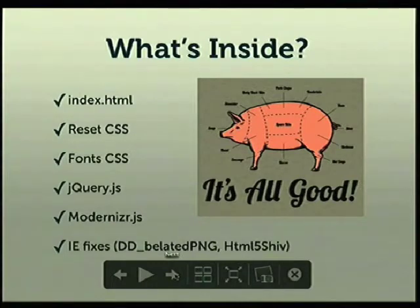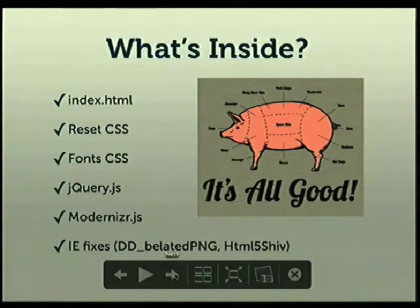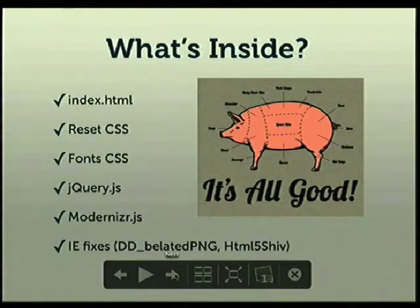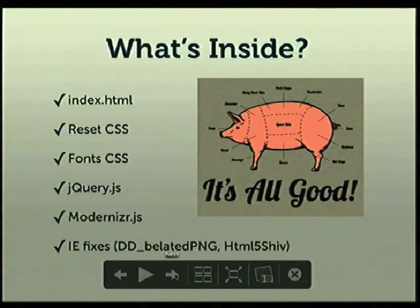Inside it, there's an index.html that includes all the stuff you need to be compliant. There's a reset CSS — essentially Eric Meyer's Reset Reloaded — a font CSS which is a modified YUI, jQuery of course, and Modernizr, which puts a bunch of style classes on your HTML tag so you can query whether a browser supports gradients, for example, instead of doing browser version checks which is bad practice.